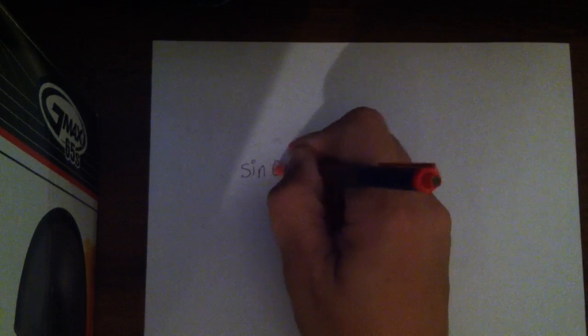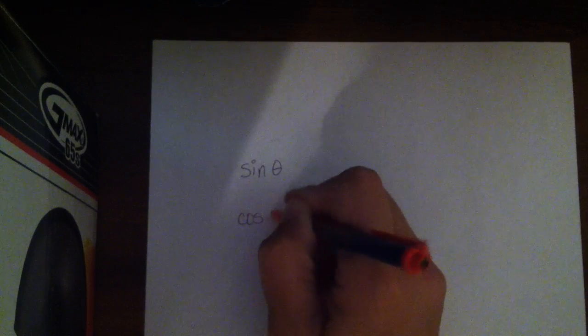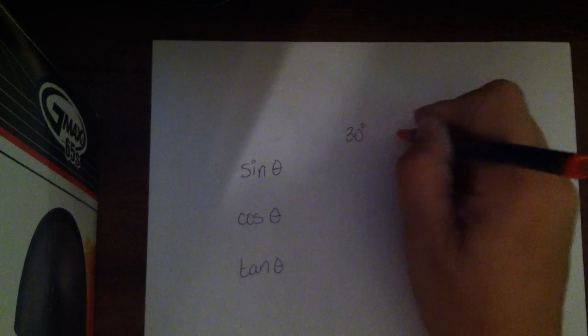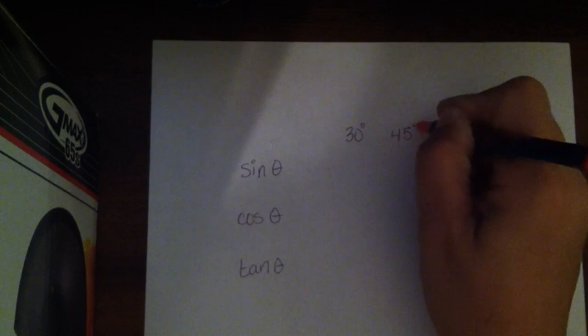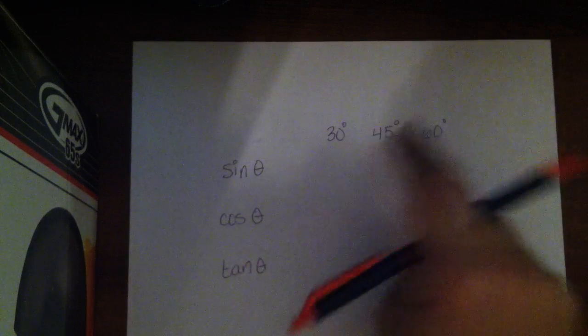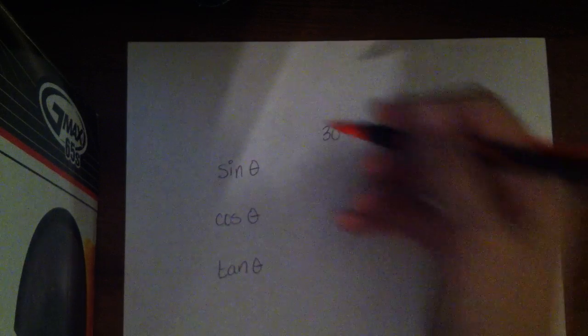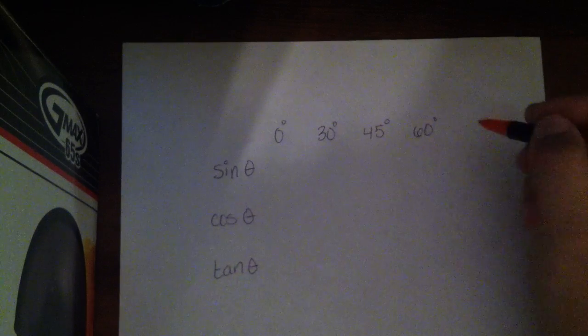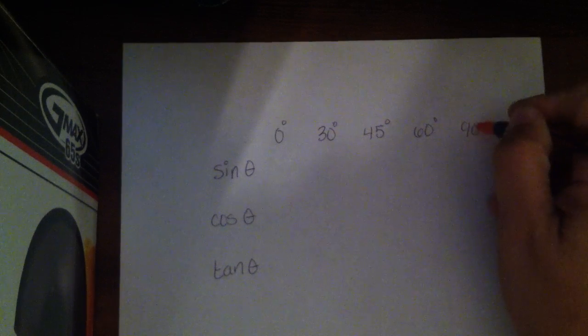there are some special angles that we want to memorize the trig values for, and in particular, the sine value, the cosine value, and the tangent value for 30 degrees, 45 degrees, 60 degrees. These are our three special angles in quadrant 1, and we're also going to throw in here the boundaries in quadrant 1, which are 0 degrees and 90 degrees.